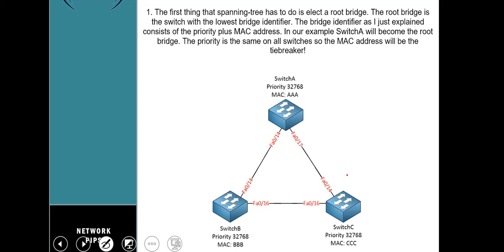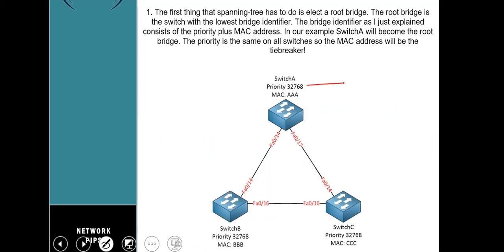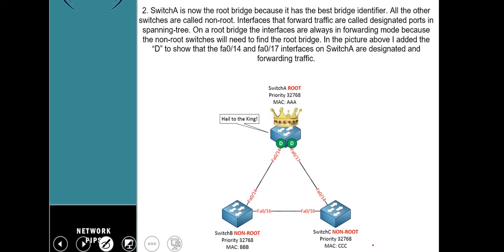The important part of the BPDU message is the Bridge ID, which contains a priority and a MAC address, along with an extended system ID. Switches running Spanning Tree use this Bridge ID to elect what is called a Root Bridge. The switch with the lowest Bridge ID wins the election. By default, the priority of all switches is the same, so the tiebreaker is the MAC address. Switch AAA has the lowest MAC address, so it becomes the Root Bridge, and every other switch becomes a non-root bridge.